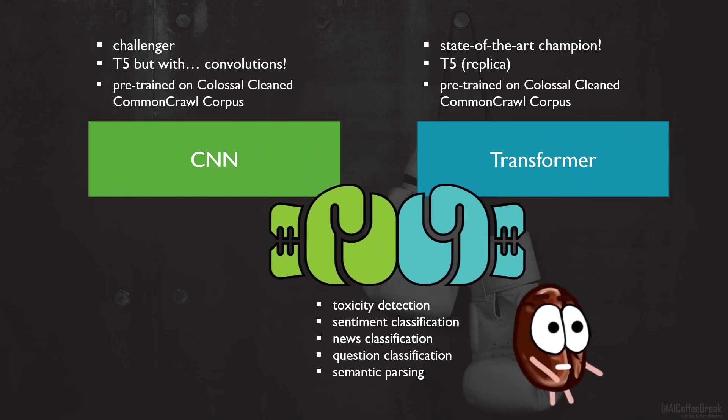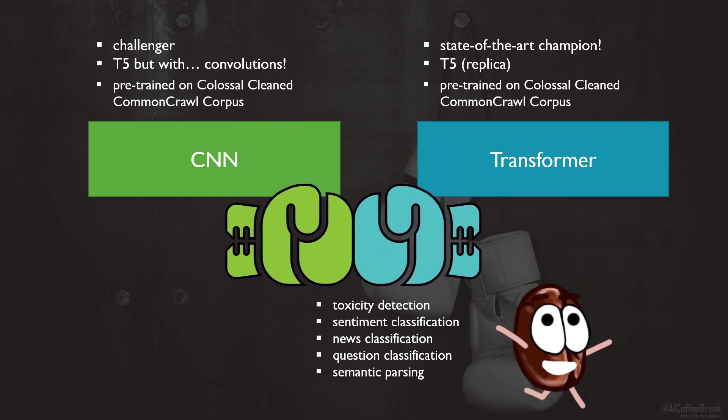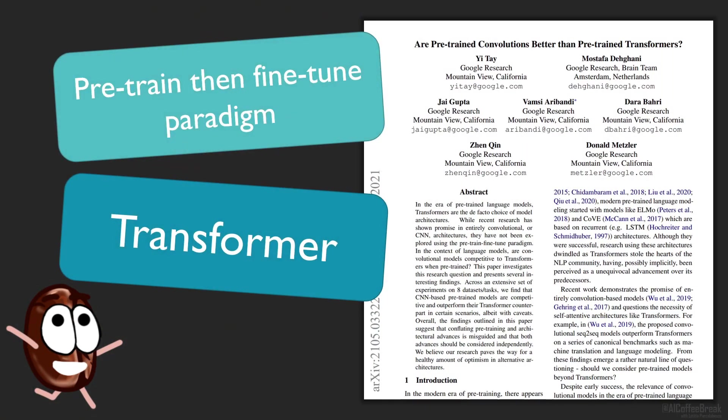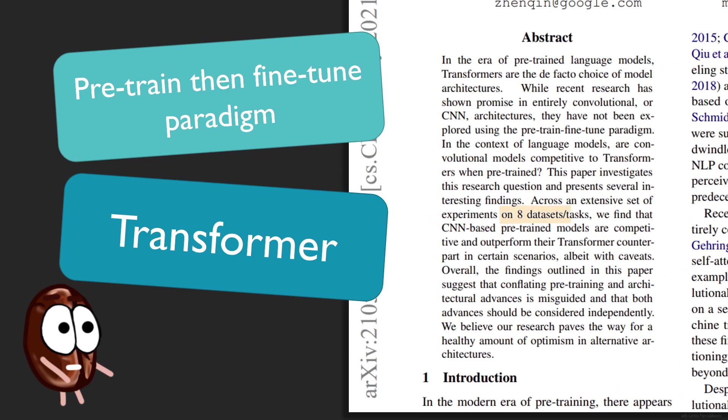In conclusion, the authors themselves say there is no clear winner in this battle. What Miss Coffee Bean likes about this paper is that it shows there is some architectural tuning that might be beneficial on certain tasks. The point of discussion for Miss Coffee Bean is on the last point made in the paper about disentangling pre-training and architectural advances.